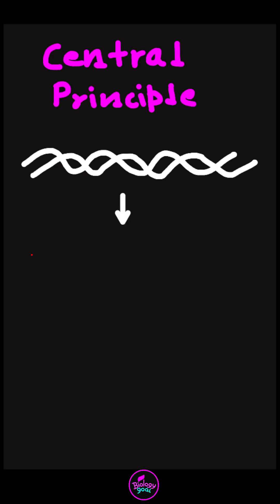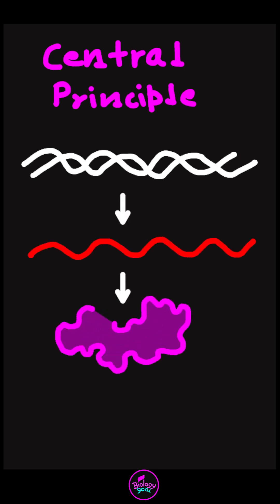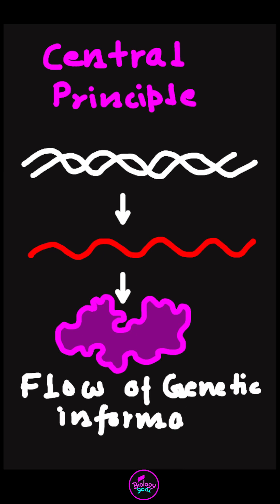This is the central principle of molecular biology. DNA to mRNA and from mRNA to protein. The essential flow of genetic information in every living cell.